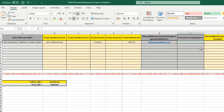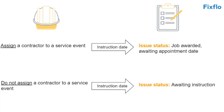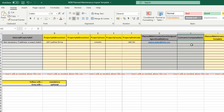Column H is your contractor company name — also a grey optional field. If you would like to automatically assign planned maintenance events to your contractors, add the company name here. If you add a contractor company name, then on the instruction date an issue will go straight out to the contractor with the status "job awarded awaiting appointment date." If you decide not to add a contractor, then on the instruction date the issue will be created with the status "awaiting instruction" and you will need to instruct it to a contractor manually.